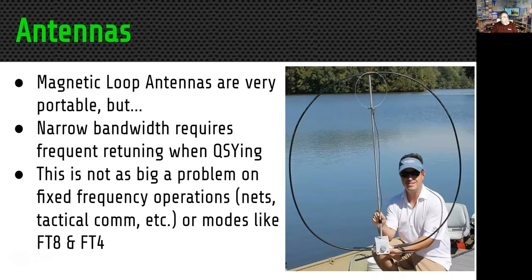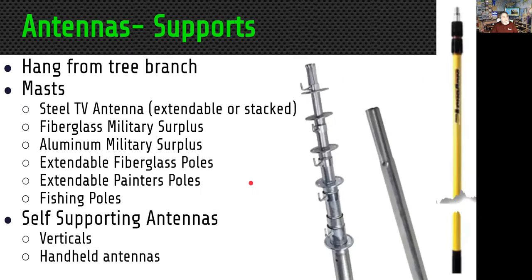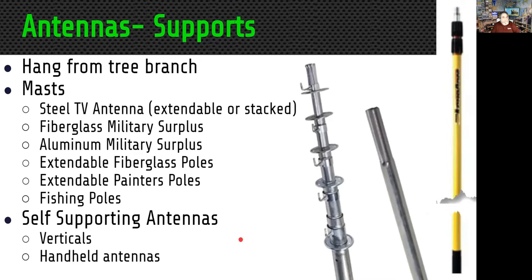Magnetic loops are a very portable antenna — fairly light and easy to carry. They can be a pain on HF because every time you QSY you have to retune them. But if you're calling CQ on the same frequency, running a net, doing tactical communications, or using FT8/FT4, magnetic antennas can work very well. Once we choose an antenna, we need to get it up in the air. Many people use extendable mast types — the common one that held TV antennas at home from Radio Shack. I find painter poles work very well: fairly lightweight fiberglass, they extend up, and have a nice little screw on top that you can attach to your Buddy Pole.